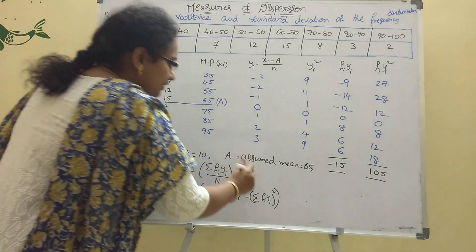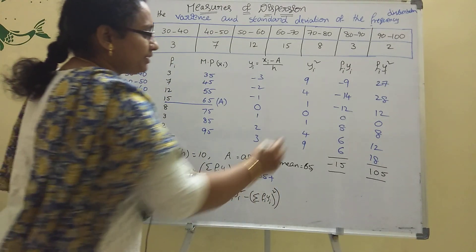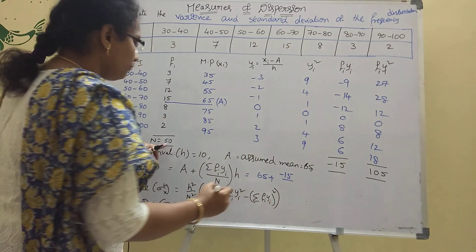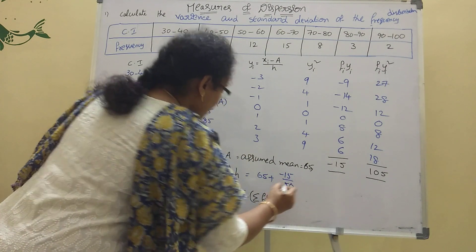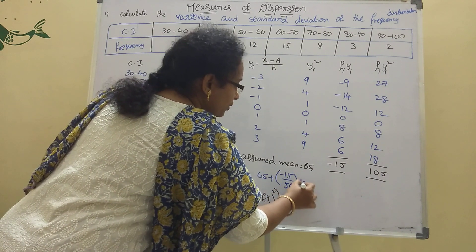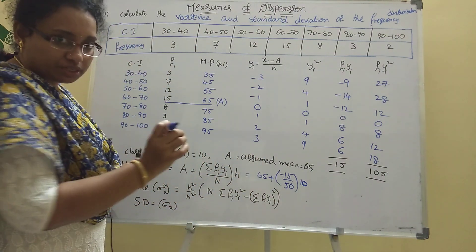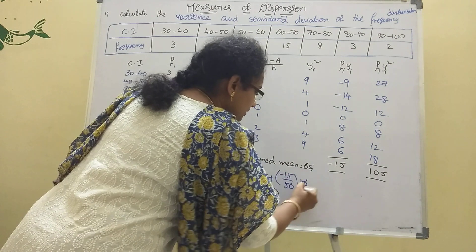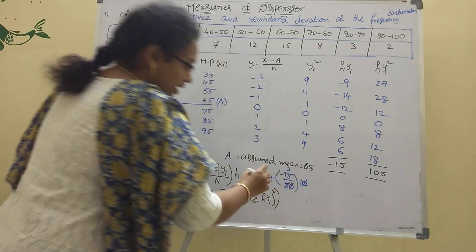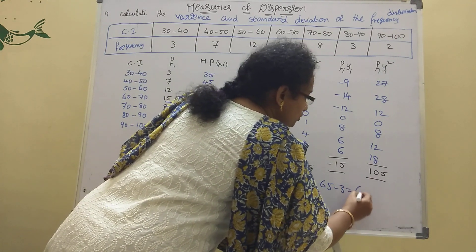Substituting: a = 65, Σfi·yi = −15, n = 50, h = 10. So x̄ = 65 + (−15 / 50) × 10 = 65 + (−3) = 62. The mean is 62.